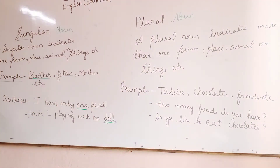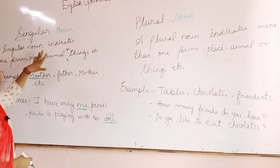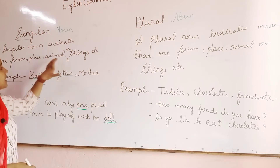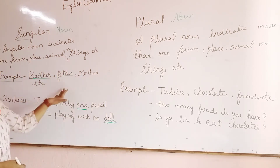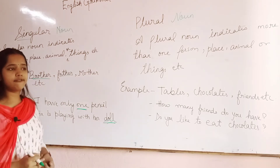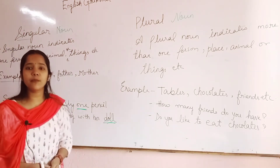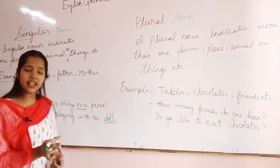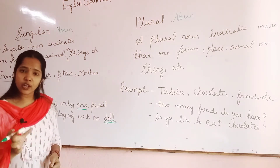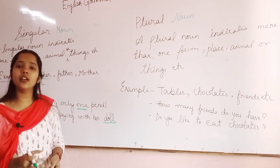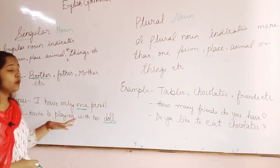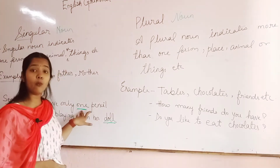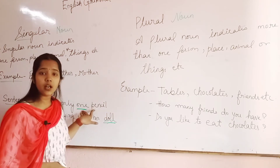Once more I have written the definition, examples, and sentences. Singular noun indicates one person, animal, or thing. Examples: brother, father, mother. For instance, if I say 'Abhishek is my brother,' it comes under singular noun. The sentence 'I have only one pencil' — here pencil is mentioned, so it will be singular noun.